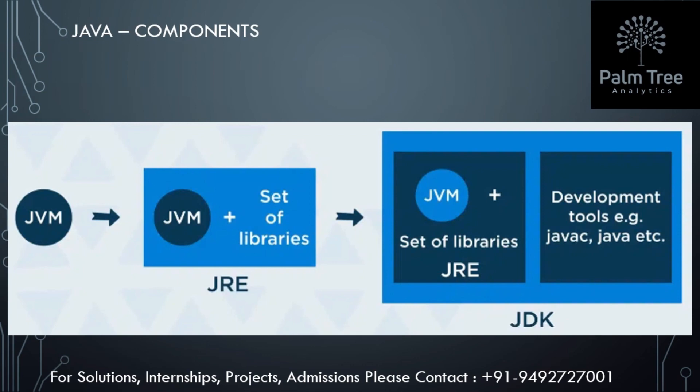JDK is the Java Development Kit. It is a software environment which is used to develop Java applications. It contains JRE plus other development tools to build Java applications.